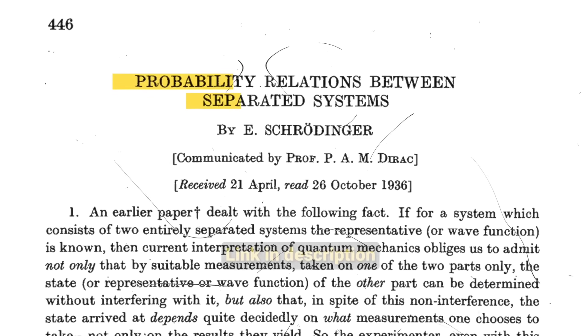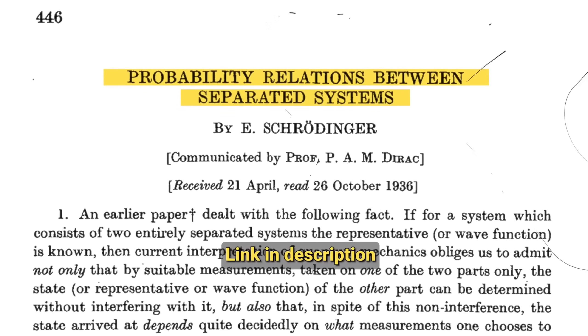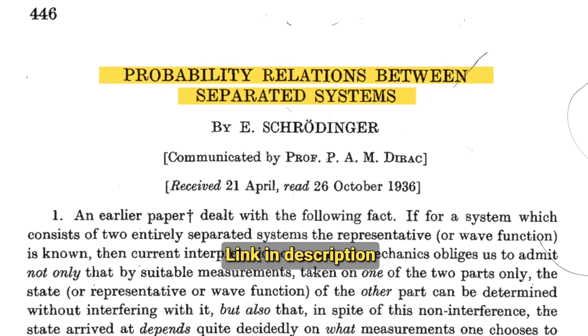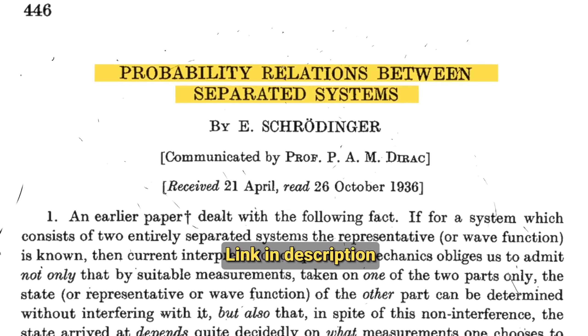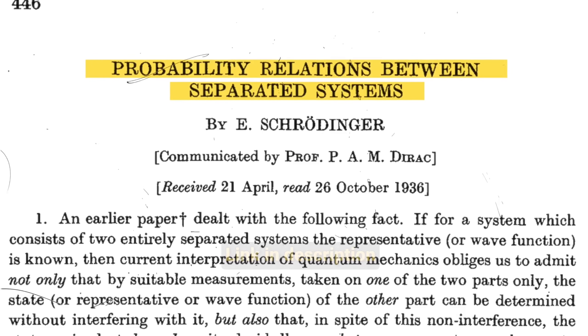In a 1935 paper, Schrödinger wrote that entanglement was not a feature, but the feature of quantum mechanics that enforced its distinction from the classical case.